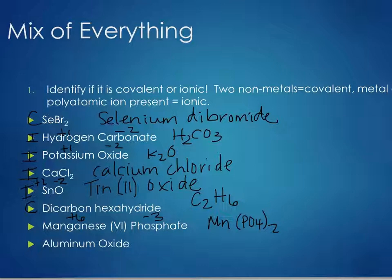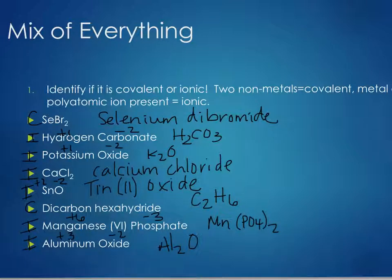For aluminum oxide: aluminum has a plus three charge and oxygen has a minus two charge — that's a three-two combination. We need a total charge of six to cancel things out, so we need two aluminums to get to plus six and three oxygens to get to minus six: Al₂O₃.